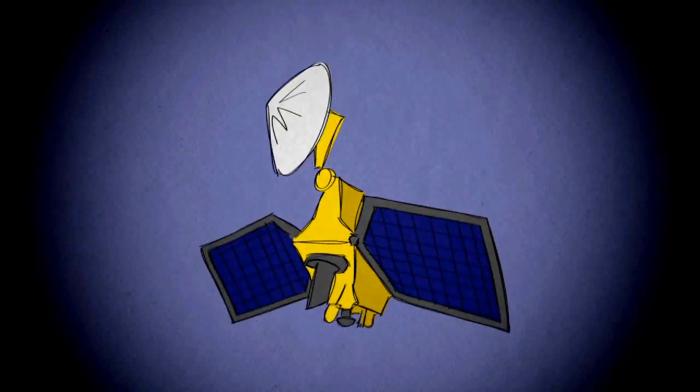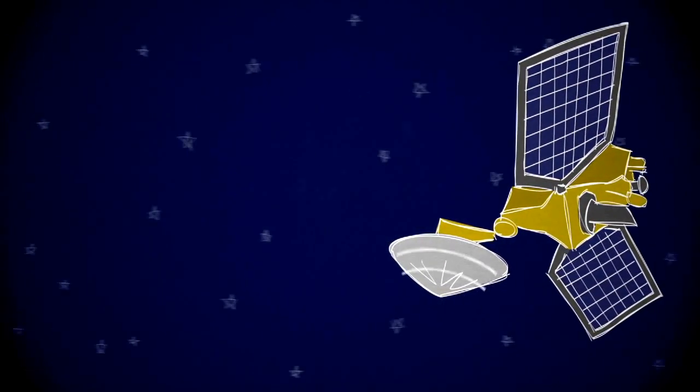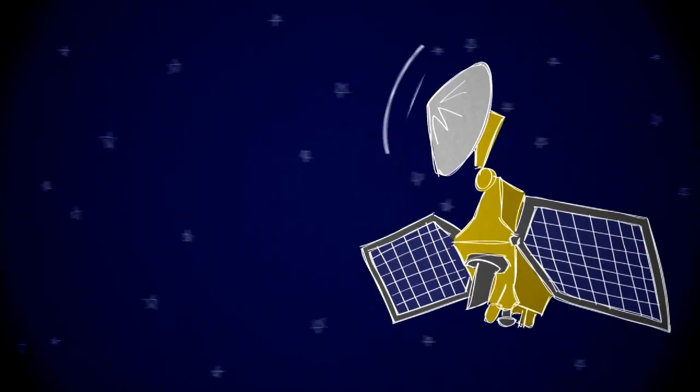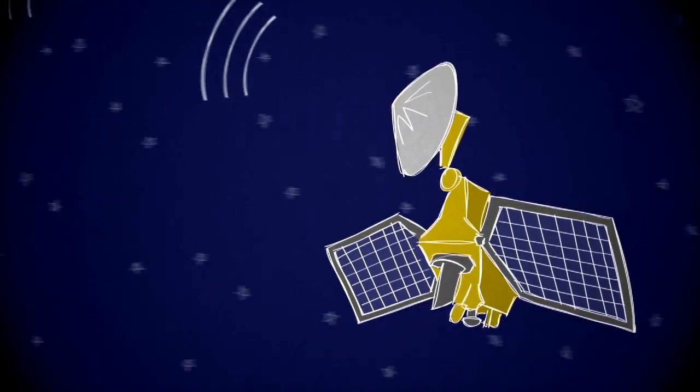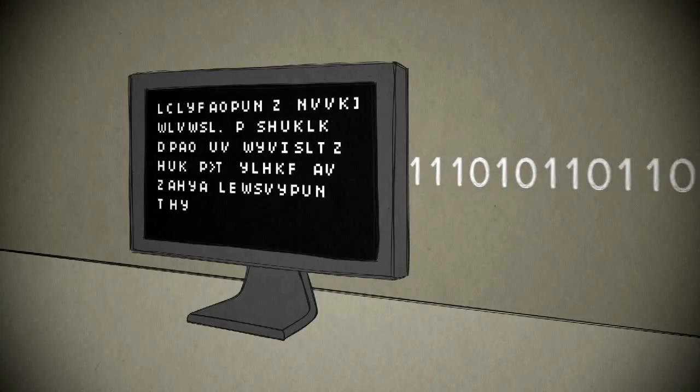So the Mars Reconnaissance orbiter plays the role of backup. It will also fly overhead to capture what happens and then store the landing data it collects on board for playback to Earth a few hours later. Engineers then have to decode the data, which takes several hours.